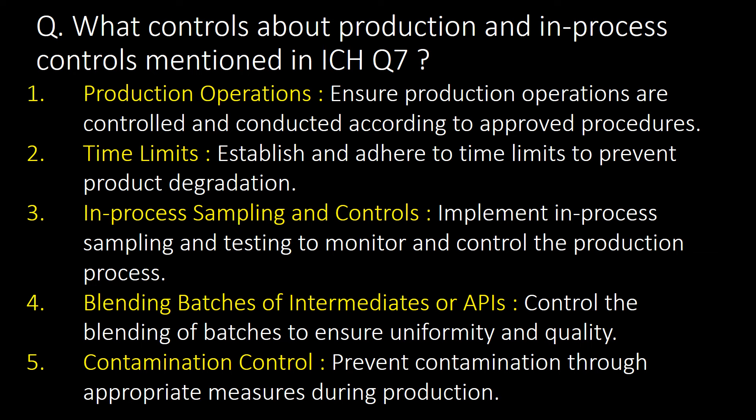What controls about production and in-process controls are mentioned in ICH Q7? Production operations, time limits, in-process sampling and control, blending batches of intermediates or APIs, and contamination control are the key controls about production and in-process controls mentioned in ICH Q7.